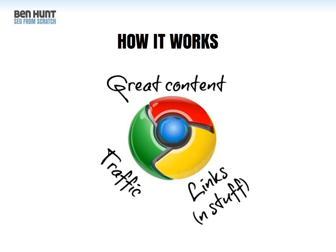This is how the snowball works — I'm shamelessly borrowing Google Chrome's logo for this. It really has three parts. When you have great content, that content can generate links and stuff: inbound links, direct visits, bookmarks, social shares. All of that can help your rankings, which helps you get more traffic. When that traffic sees your great content, it generates more links, which generates more traffic, and the whole process rolls on from there.